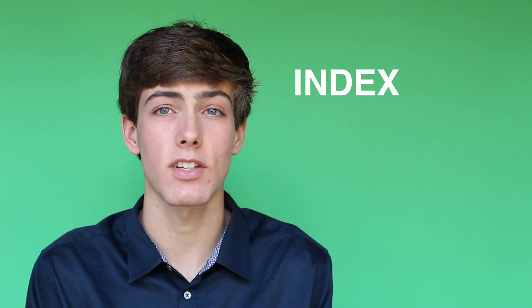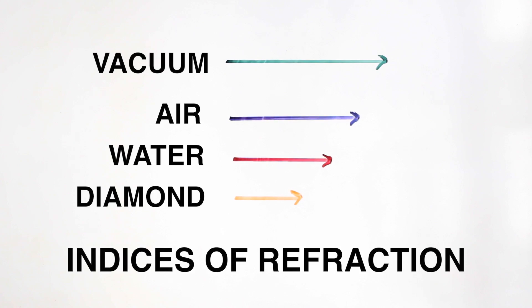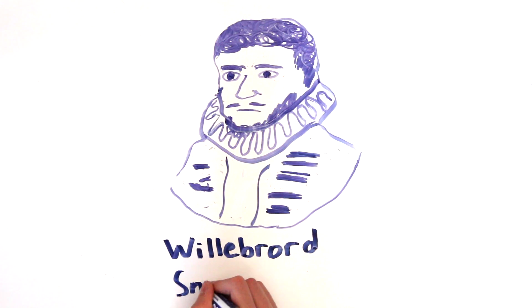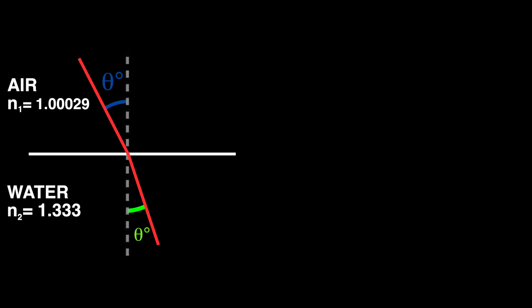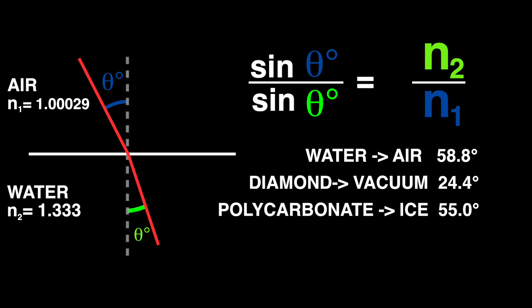The degree to which light will be bent is determined by the material's index of refraction. This is the ratio of the speed of light in a vacuum to the speed of light in the material. For water, it's 1.333, which means that light travels 1.333 times slower in water than it does in a vacuum. Dutch astronomer Willebrod Snellius described what is now called Snell's Law, which states that the ratio of the sines of the angles of incidence and refraction is equal to the inverse of the ratios of the respective material's indices of refraction. This enables us to calculate the critical angle for any pair of materials.